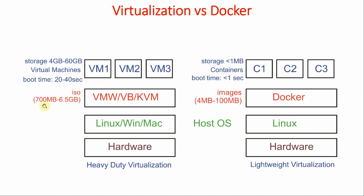For example, Windows XP ISO is 700 MB, Ubuntu is between 1 GB to 1.2 GB, Red Hat Enterprise or CentOS is approximately 3 to 4 GB, and Windows Server 2016 ISO is approximately 6.5 GB. Creating a VM takes around 15 to 20 minutes, and booting those VMs takes another 20 to 40 seconds. Storage requirements depend on the operating system and can be between 4 GB to 60 GB.